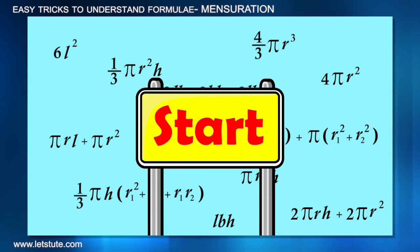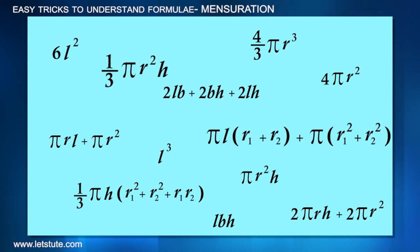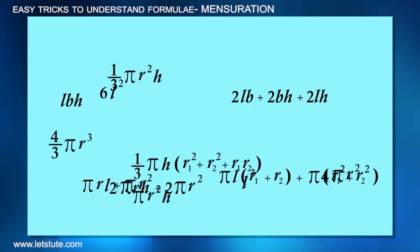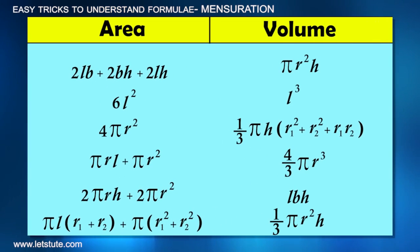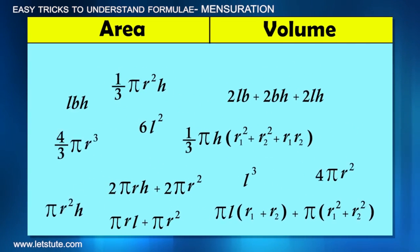So here we start. These are the formulas of all the shapes which are mixed up and very difficult to bifurcate according to the shapes and properties. What we will do is first divide them according to their areas and volumes. This is where we apply basic knowledge.